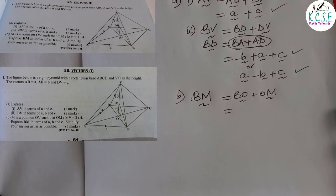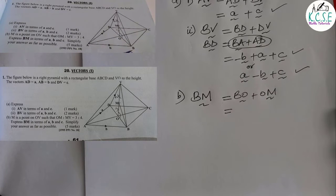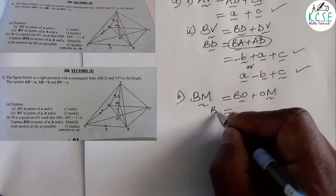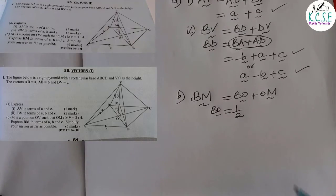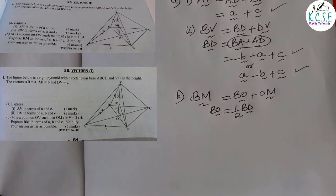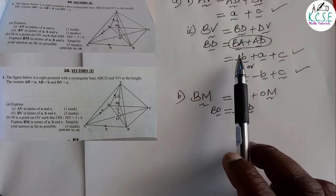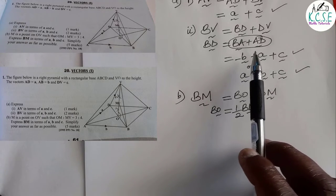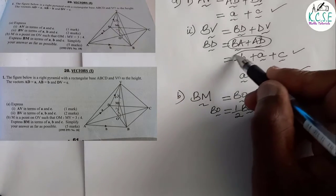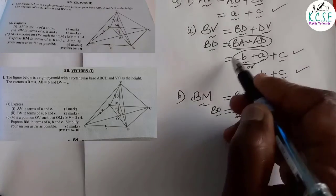To find BO: note that O is the midpoint of line BD. So vector BO = half of BD. We already have BD = a minus b from the previous part. So BO = half times (a minus b), which gives half a minus half b.